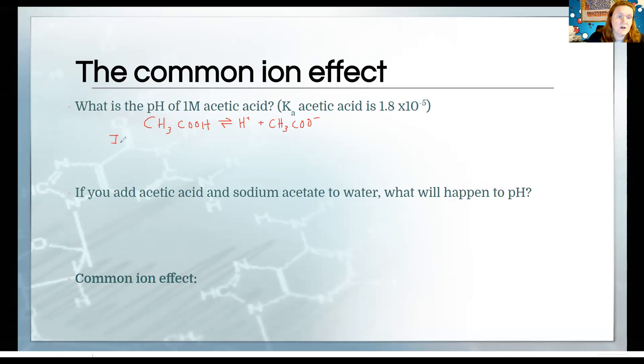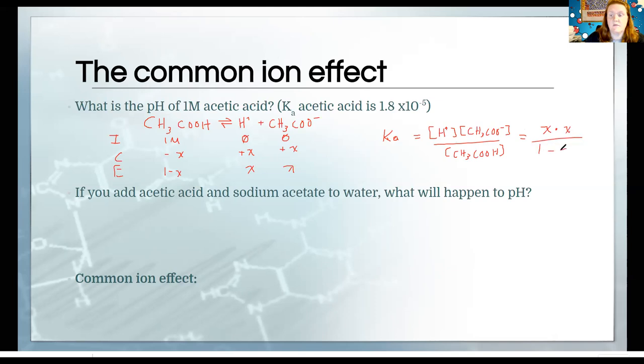Initially here we would have one molar acetic and none of these. The change is going to be that we're going to have to consume some of the acetic to produce some of our products. At equilibrium we end up with this. This is a Ka because it's an acid producing H plus, defined as H plus times the conjugate divided by the parent. In this case it's just one proton so it's one step. We can just say x times x on the top divided by the one molar minus x.